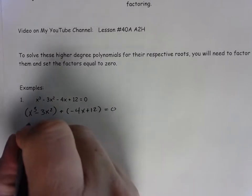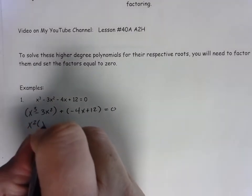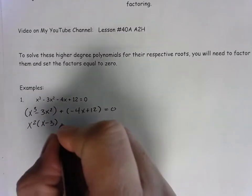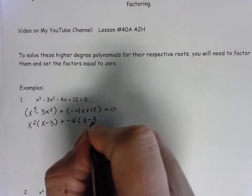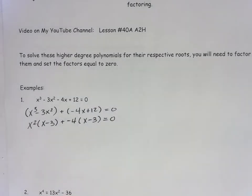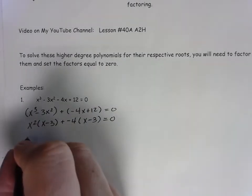The x squared comes out of the first, leaving me with x minus 3. Negative 4 coming out of the second, leaving me with x minus 3. The sign changed due to the factoring of negative, the result being x minus 3.